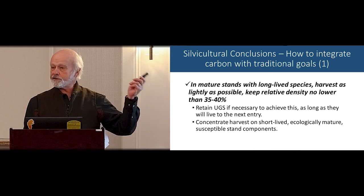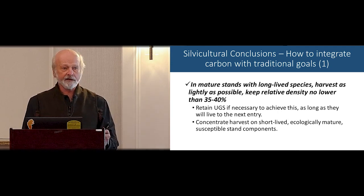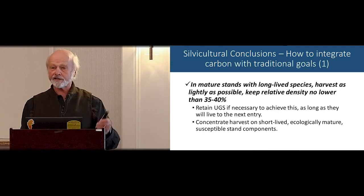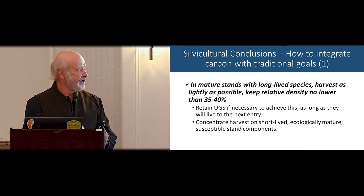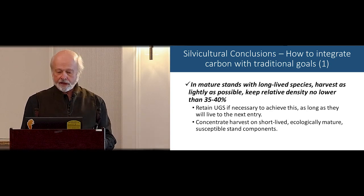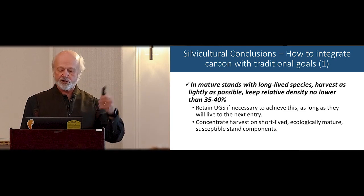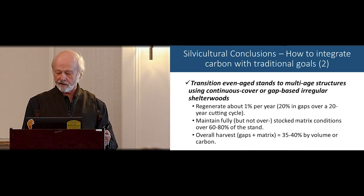Concentrate on your short-lived species — the fir, the stuff that's going to die — cut it and get your money. That will actually be beneficial in some ways. Concentrate on what I'm calling the short-lived, ecologically mature trees: the aspens and others like them.